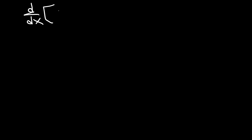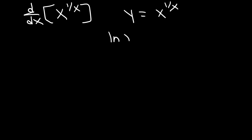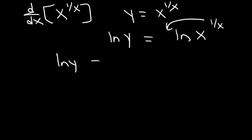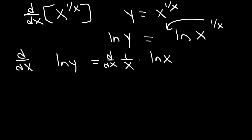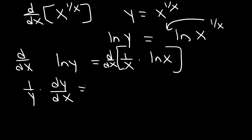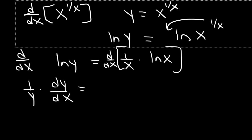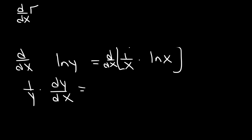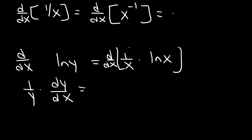Let's try one final problem: find the first derivative of x raised to the 1 over x. We set y equal to x to the 1 over x, then take the natural log of both sides, moving the exponent to the front: ln y equals 1 over x times ln x. Now we differentiate both sides. The left side gives 1 over y times dy/dx. On the right side we have a product rule situation. The derivative of 1 over x: rewrite it as x to the negative 1, use the power rule, giving negative x to the negative 2, or negative 1 over x squared.